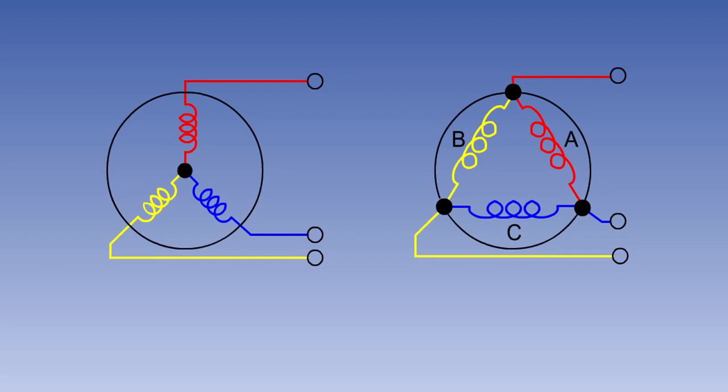Although we have said that the three phases are independent of each other, it is normal to connect their outputs together. The outputs can be connected by either the star or delta method.